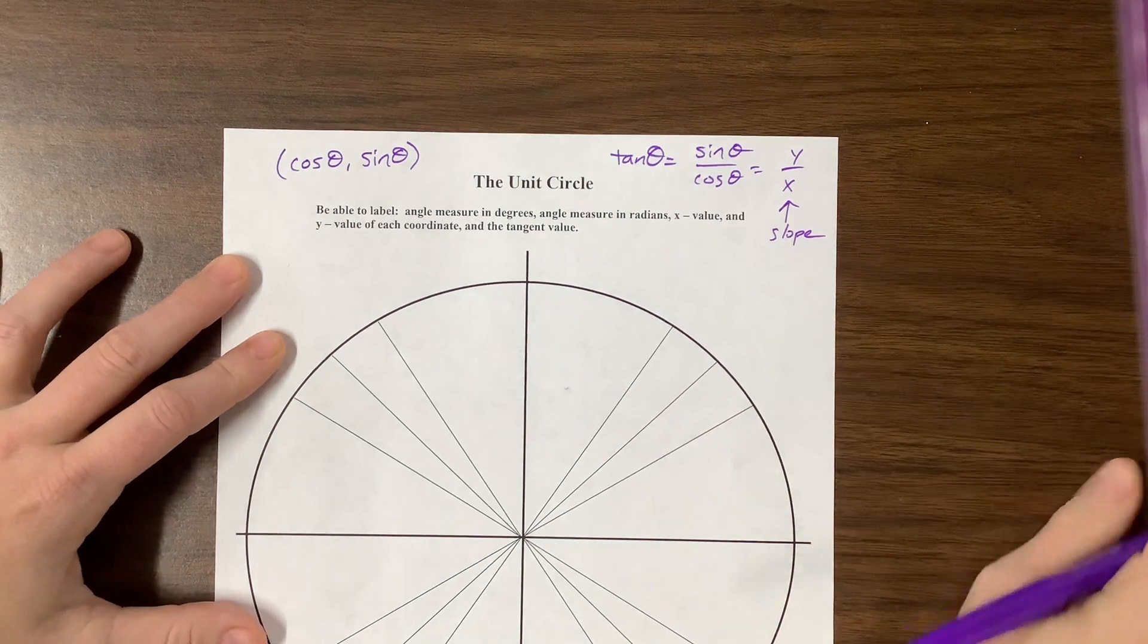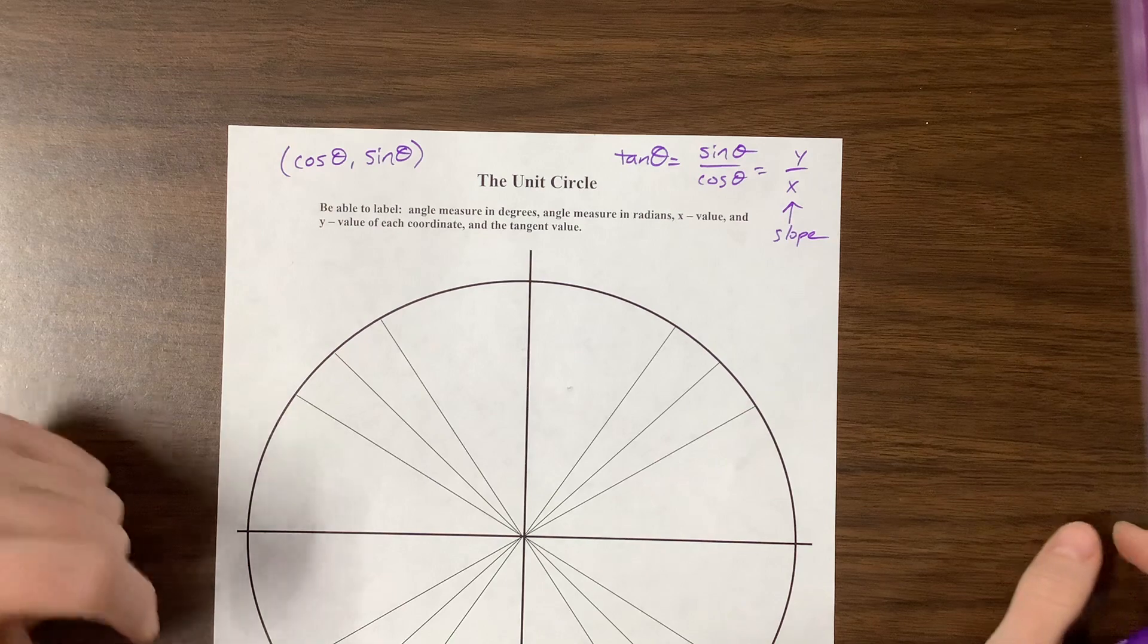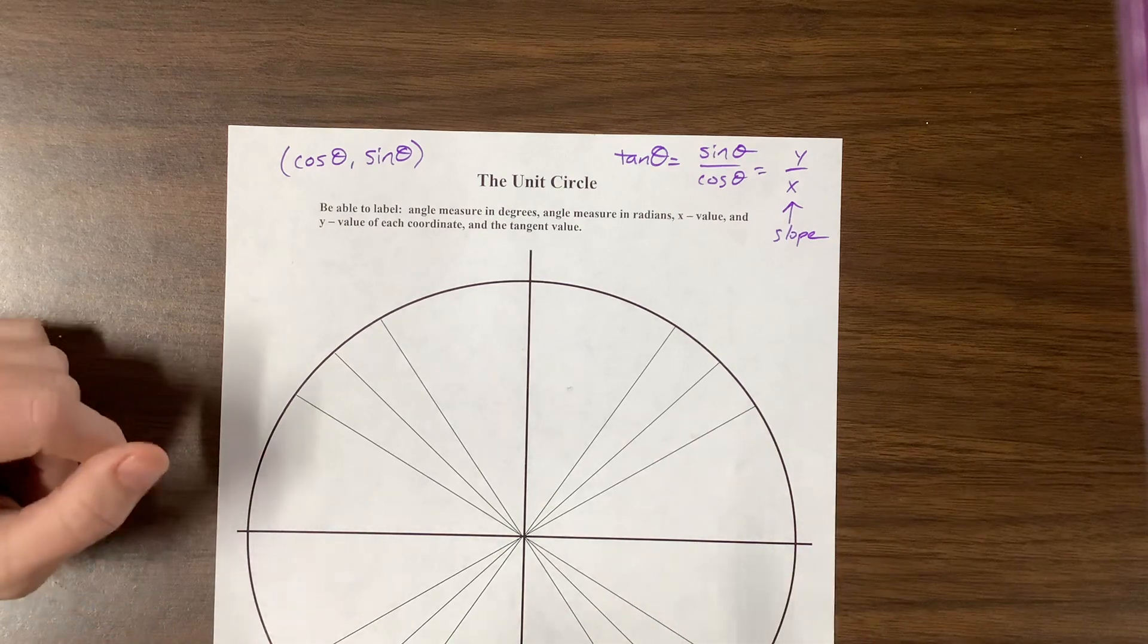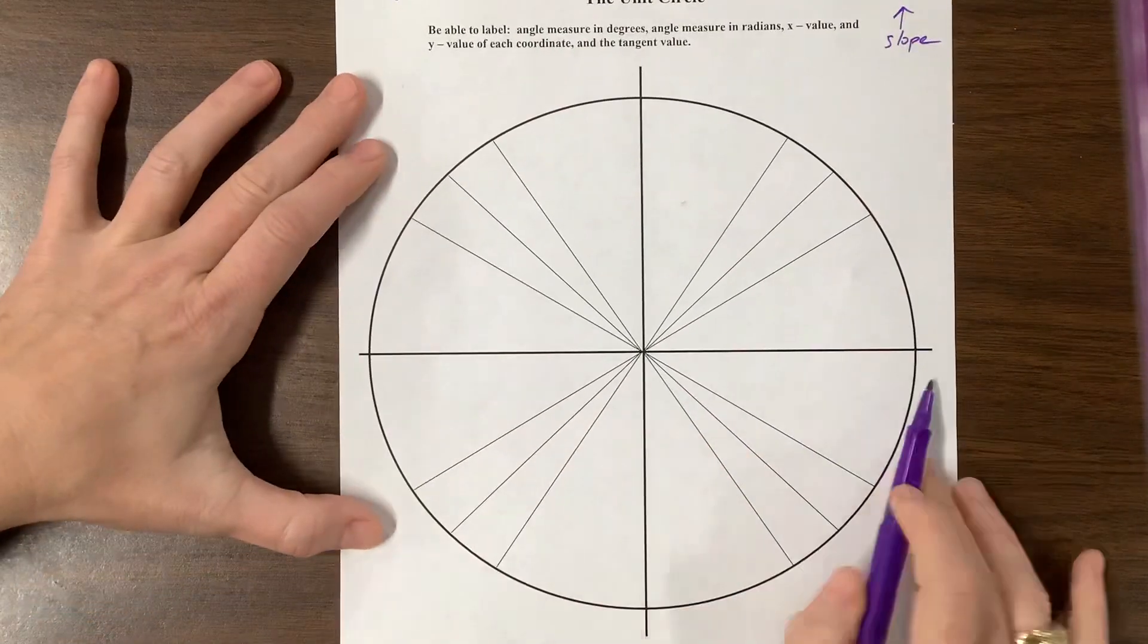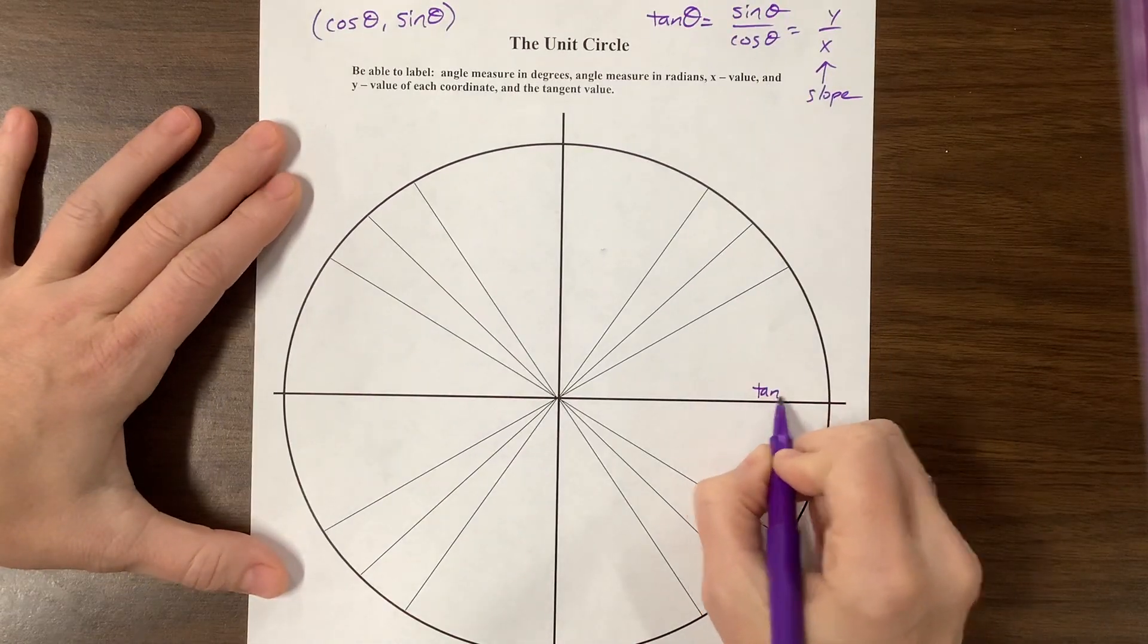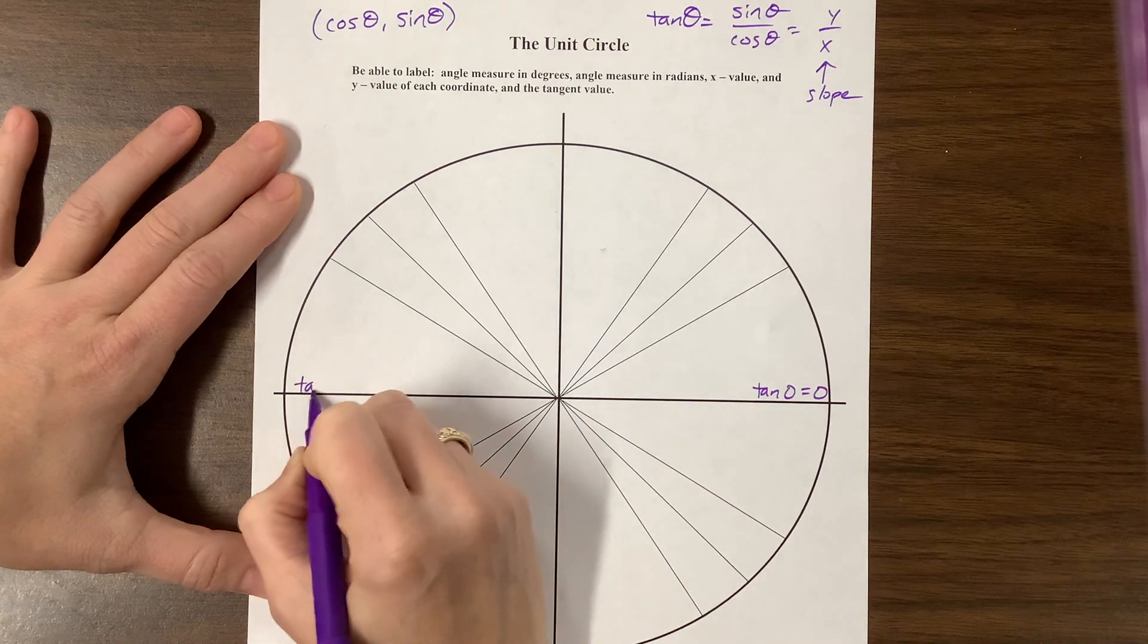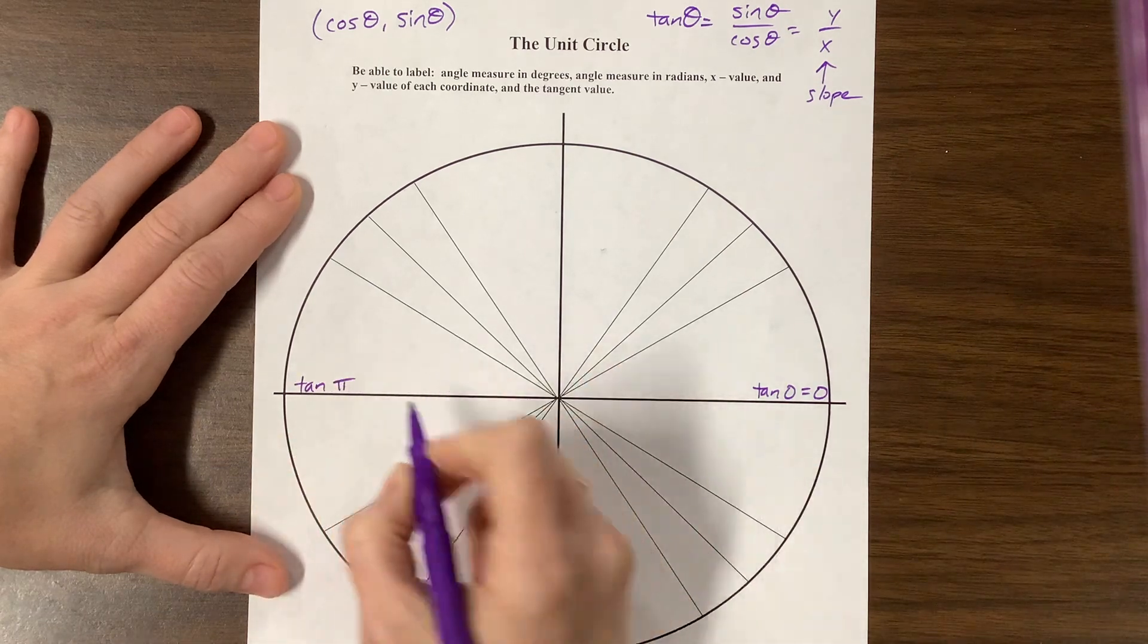The way that I, when I stand up in the classroom, I'm using my arm all the time, and we're talking about this horizontal line going like this has a slope of zero. So we can say here that tangent of, this is zero radians, is equal to zero. And over here, we have tangent of pi radians is equal to zero.